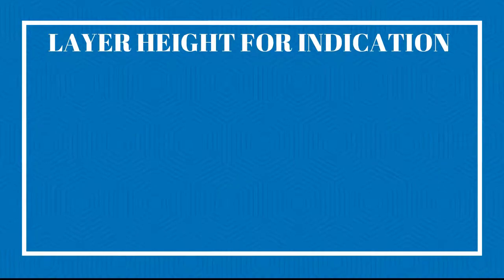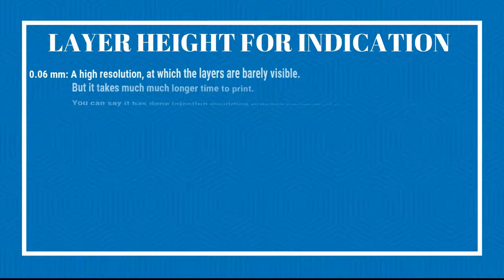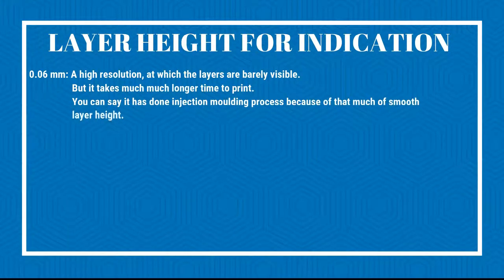There are three typical layer height settings. First, 0.06 mm — a high resolution at which layers are barely visible, but it takes much longer time to print. You can compare it to an injection molding process because it has a very smooth surface finish.